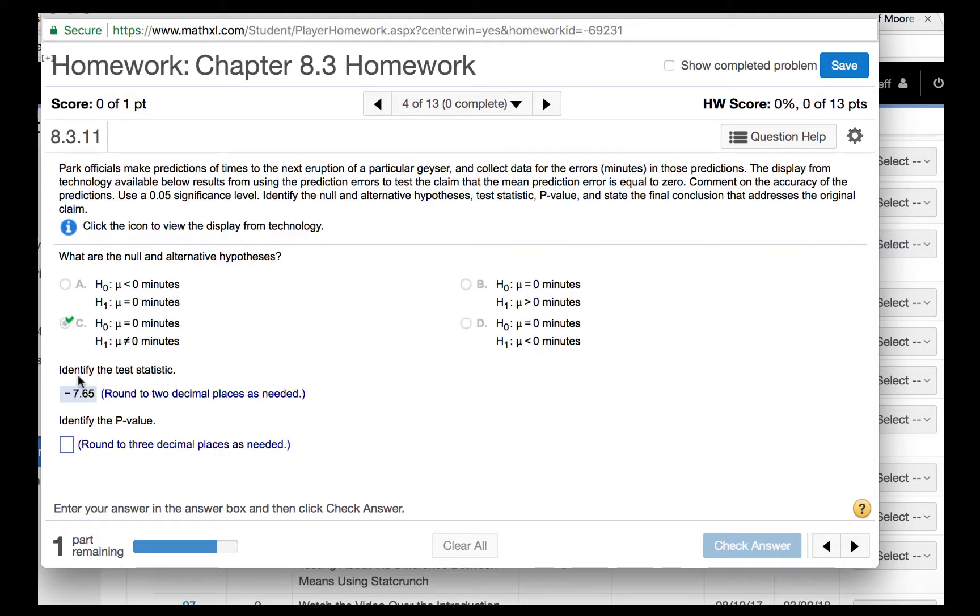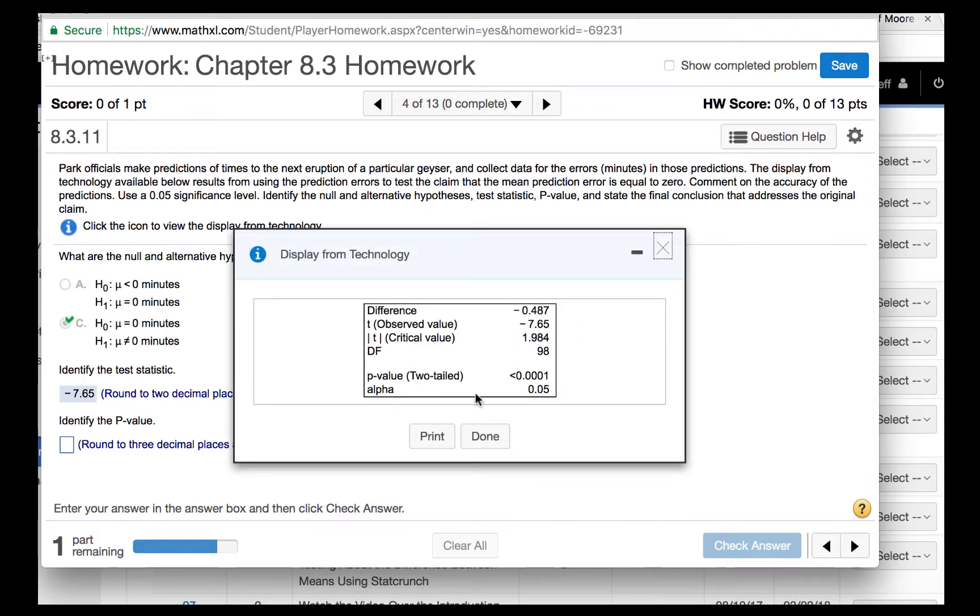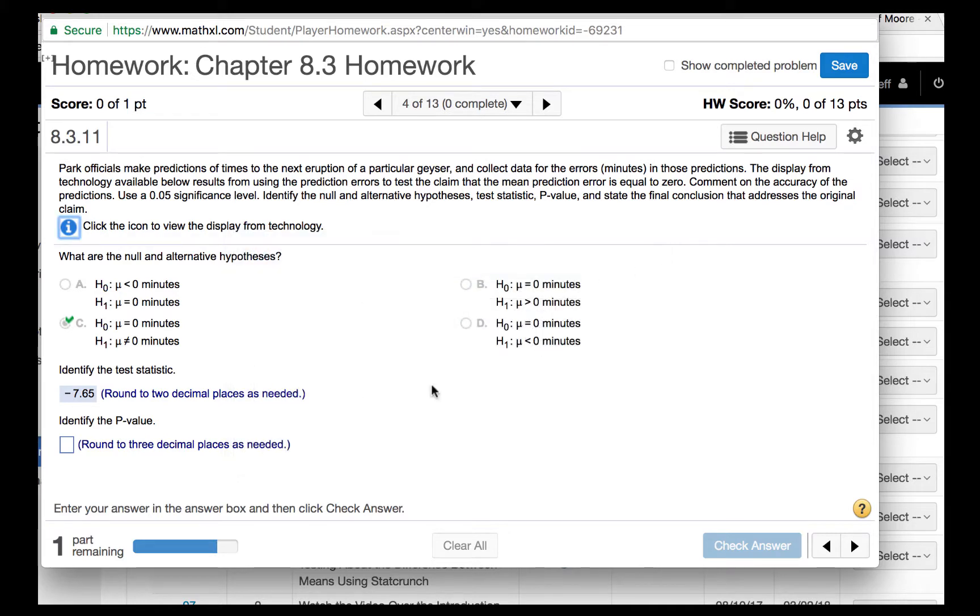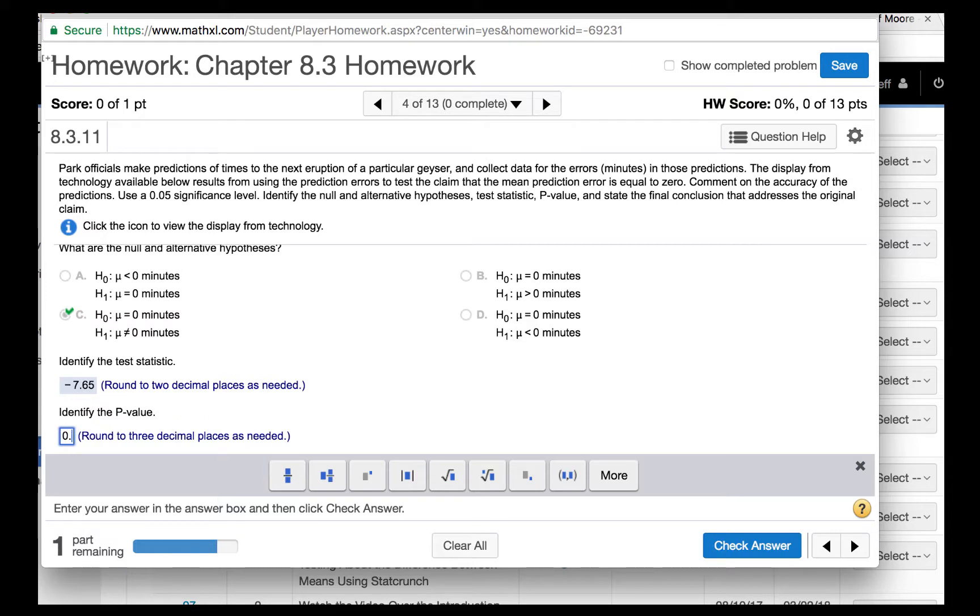Now we are to identify the p-value. Again, consulting the output, we have a p-value that is less than 0.0001. We are to round to three decimal places. Well, out to three decimal places, this is zero.